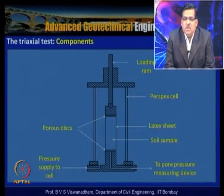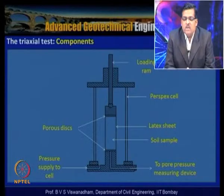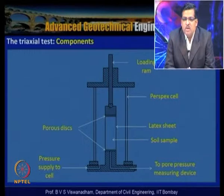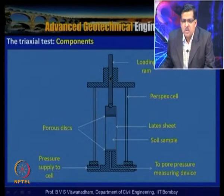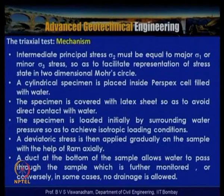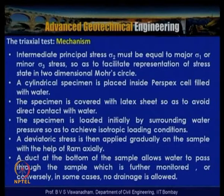When the sample is confined with all-around pressure σ₃, a deviator load is applied to induce σ₁ = σ₃ + P/A, so σ₁ − σ₃ is the deviator stress. As an example, consider a soil sample at 5 m depth below a gradually loaded foundation—the incremental load is applied through the loading ram. The intermediate principal stress σ₂ must equal either σ₁ or σ₃ to represent the stress state in a two-dimensional Mohr circle.